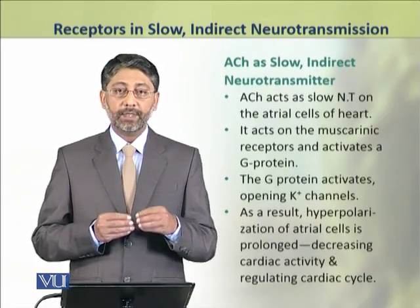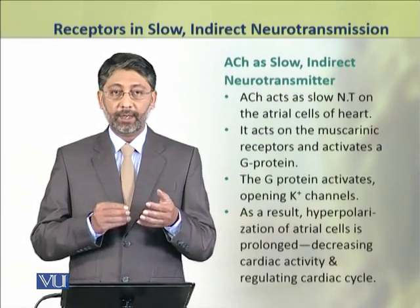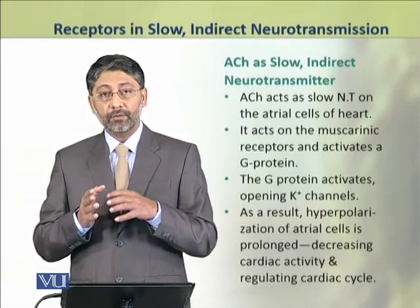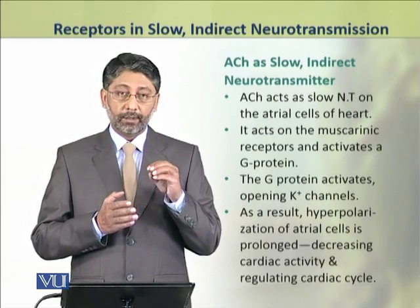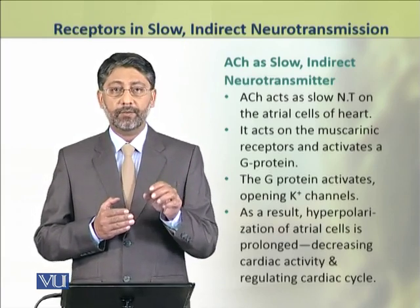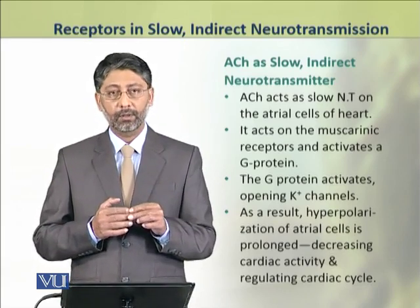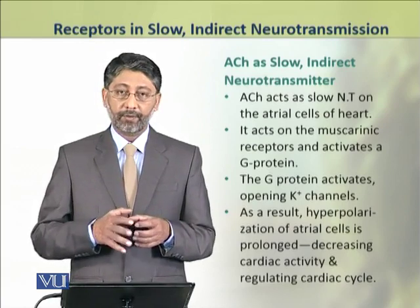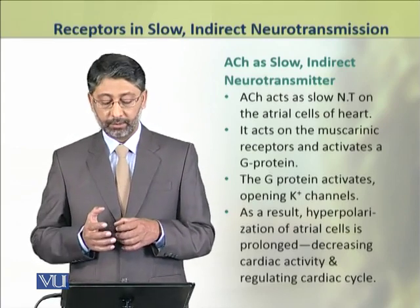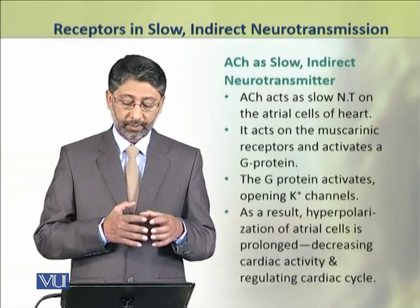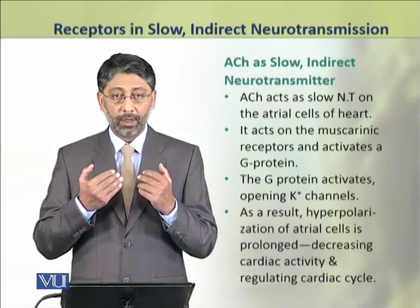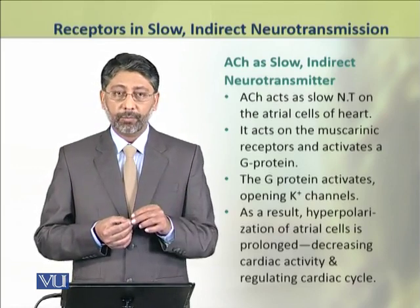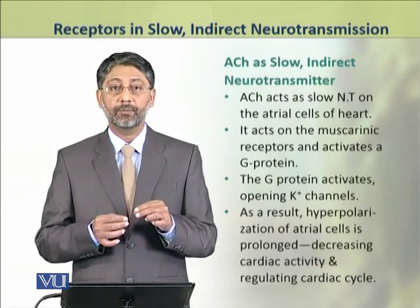As an example, acetylcholine acts as a slow indirect neurotransmitter on the atrial cells of the heart, where muscarinic acetylcholine receptors are present. As a result, it activates a G protein. The G protein in response activates and results in the opening of potassium channels. When potassium channels open, the hyperpolarization phase of the action potential is prolonged.